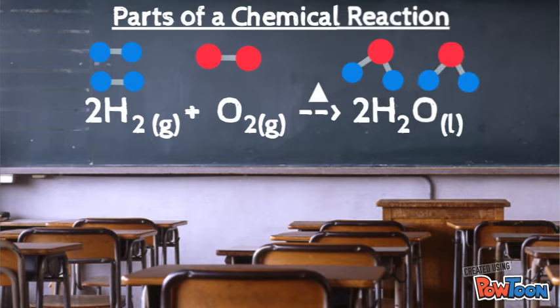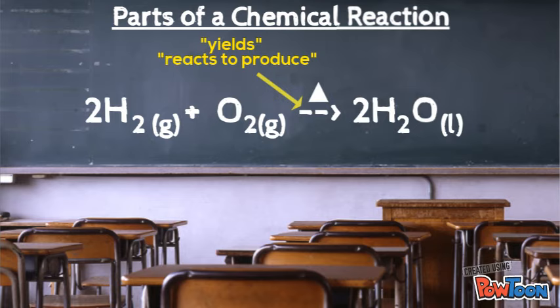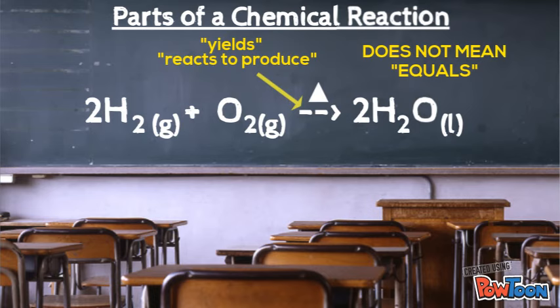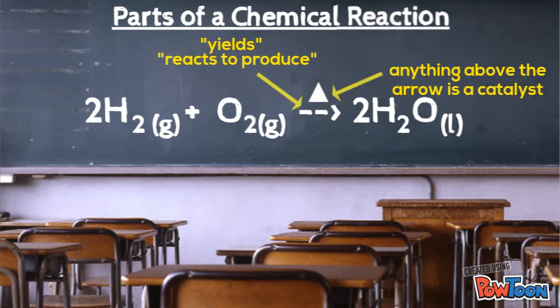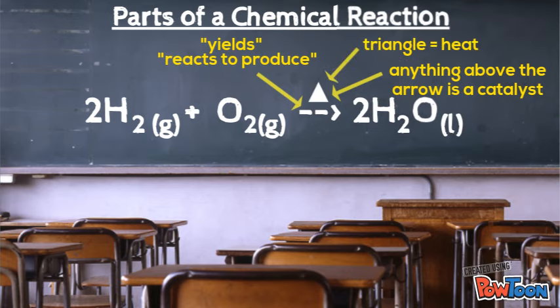The arrow between the products and the reactants means yields or reacts to produce. It does not mean equals. This is not math. Anything written above the arrow is a catalyst. It can be a symbol or it can be an actual formula. The symbol for the triangle actually means heat.